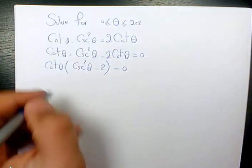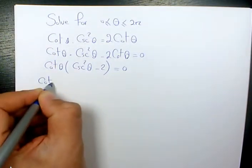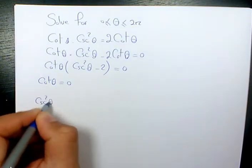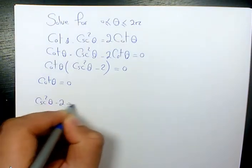Then we have two scenarios. One when cotangent theta equals 0 and when cosecant squared theta minus 2 equals 0.